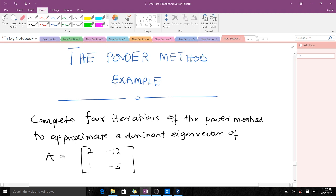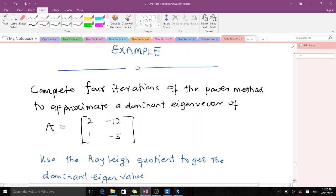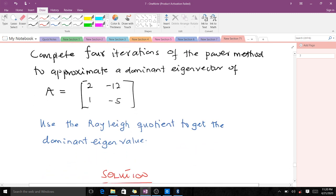We are supposed to complete four iterations of the power method to approximate a dominant eigenvector of matrix A. Then we use the Rayleigh quotient to get the dominant eigenvalue of matrix A.